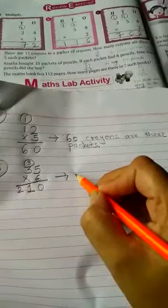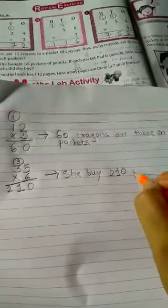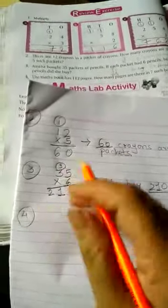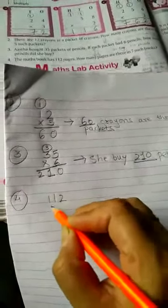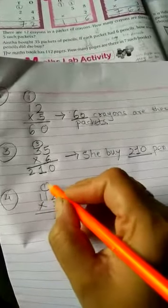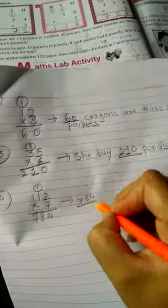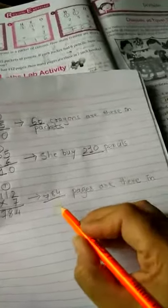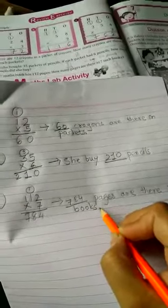Fourth number: the math book has 112 pages. How many pages are there in seven such books? So 112 multiply by 7. 7 twos are, or 2 sevens are 14. 7 ones are 7, 7 plus 1 equals 8. And 7 ones are 7. So here we will write 784 pages are there in seven books.